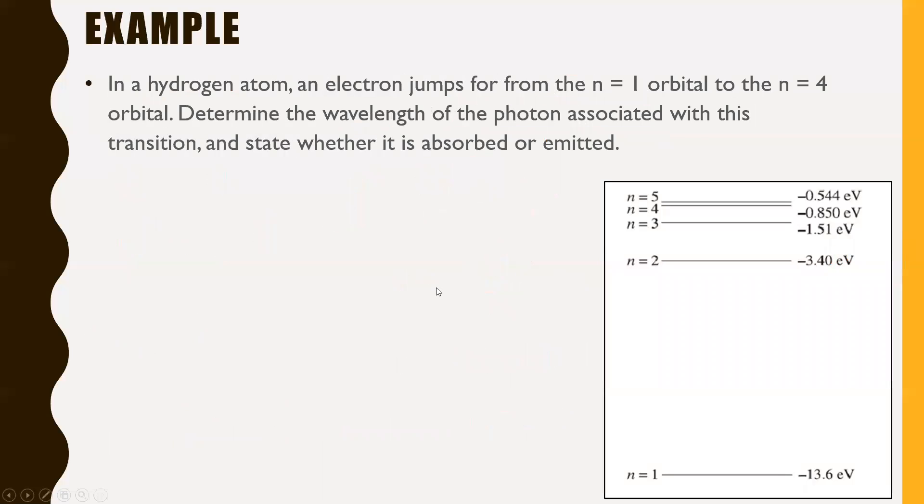All right, next question here. In a hydrogen atom, an electron jumps from the n equals one orbital to the n equals four orbital. Determine the wavelength of the photon associated with this transition and state whether it was absorbed or emitted. Pause the video here. Give this one a try.